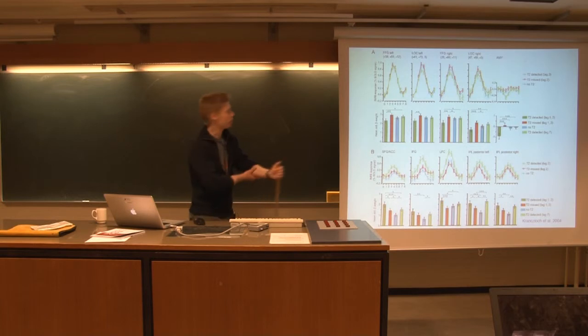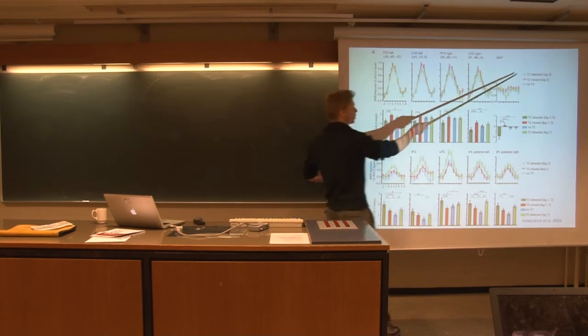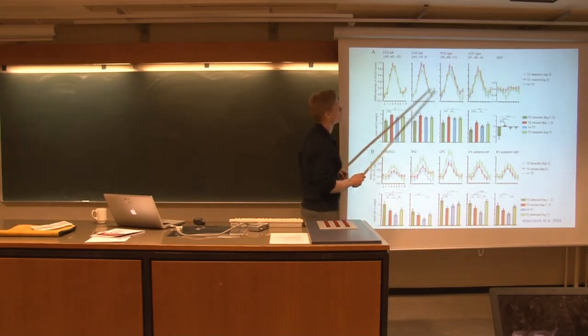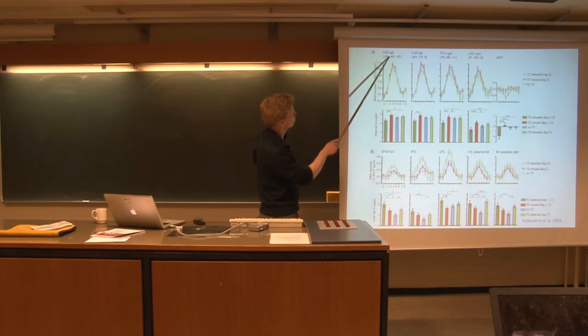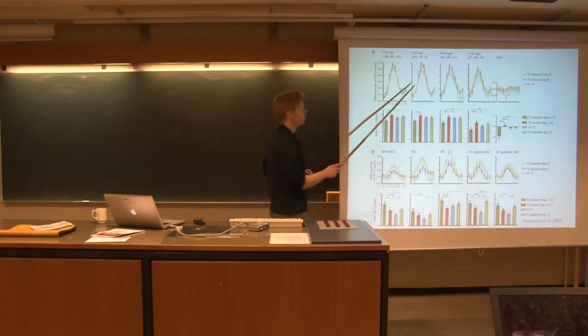So there have been a lot of studies looking at this phenomenon, and they have looked at different regions of the brain where you either detect target two or you miss target two. And you can see, for instance, in some of the fusiform gyrus and the lateral occipital complex...